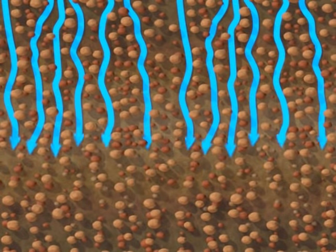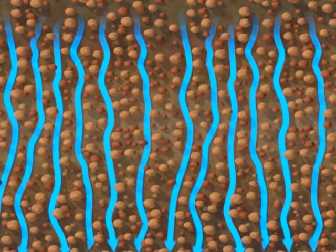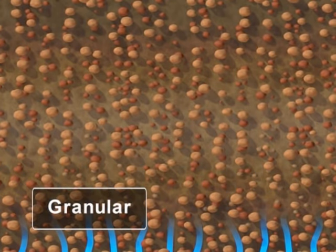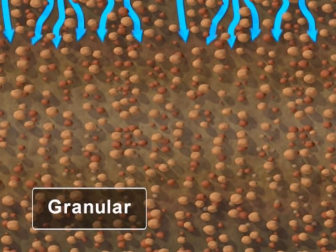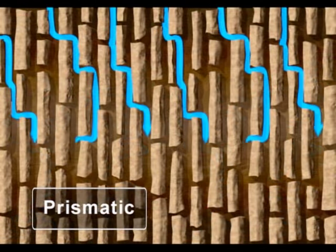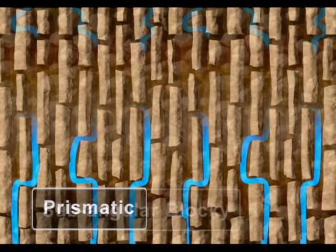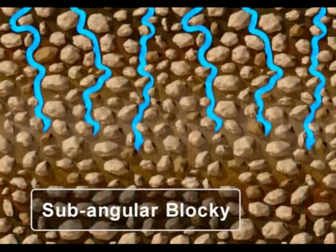Soil structure also impacts water movement. Water moves more quickly downward in soils with granular structure than a soil with platy structure that forces a longer, indirect path downward. Other structures include prismatic and subangular blocky.